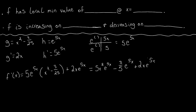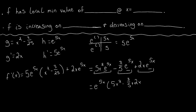Now we can plainly see that each term — separated by addition or subtraction — has e to the 5x in common, so we factor that out. We get f prime of x equals e to the 5x times (5x squared minus 3 fifths plus 2x). This is our derivative, and it's defined for all x.